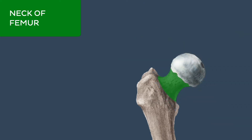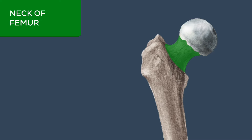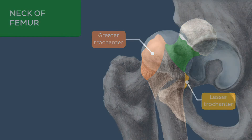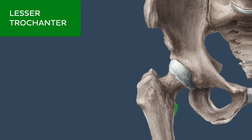At the base of the neck of the femur are two femoral trochanters: the lesser trochanter and the greater trochanter. The lesser trochanter is a conical eminence of variable size, projecting from the medial aspect of the proximal end of the femur.